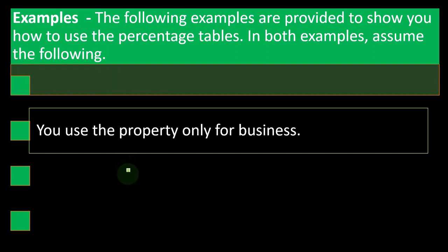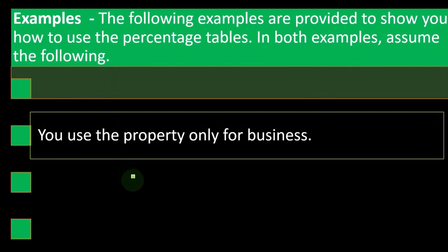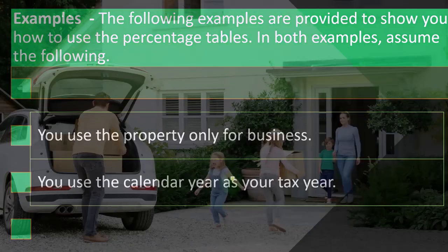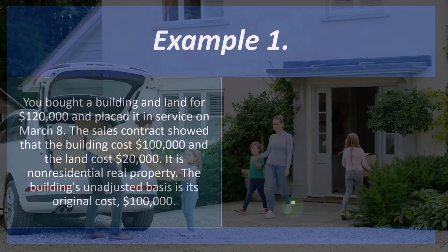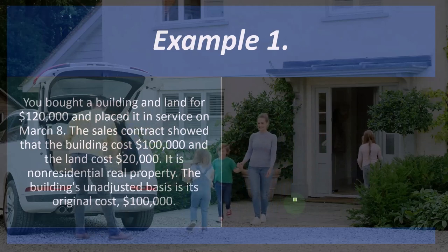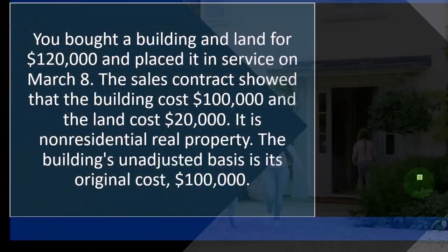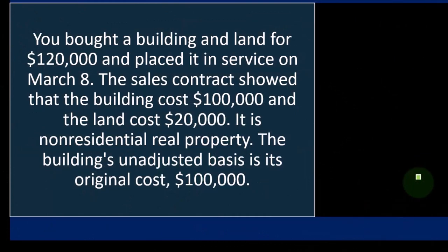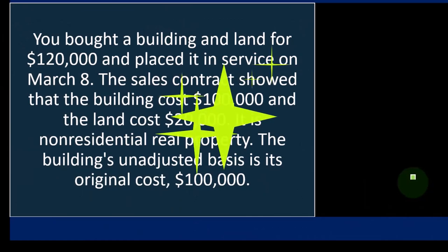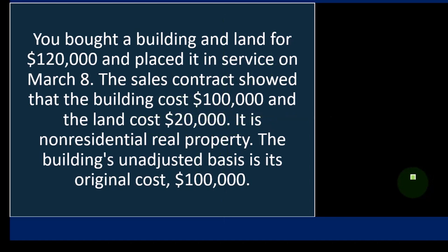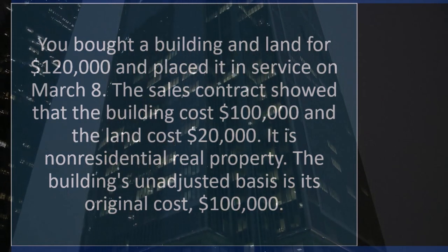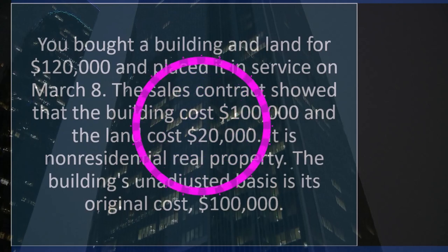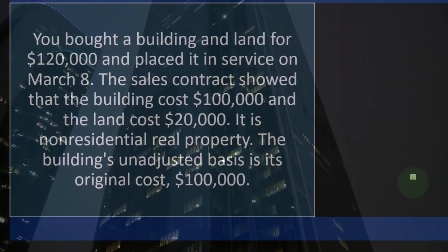Example one: The following examples show how to use the percentage tables. Both examples assume you use the property only for business (no personal use), you use the calendar year as your tax year, and you use GDS for all properties. You bought a building and land for $120,000 placed in service on March 8th. The sales contract showed the building cost $100,000 and the land cost $20,000. When you buy building and land together, you have to break out how much was building and how much was land because land is not depreciated, but the building is.